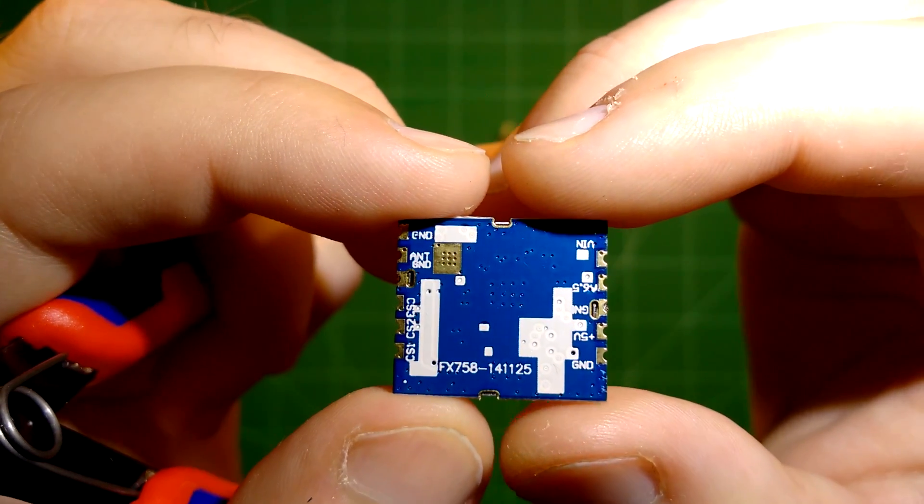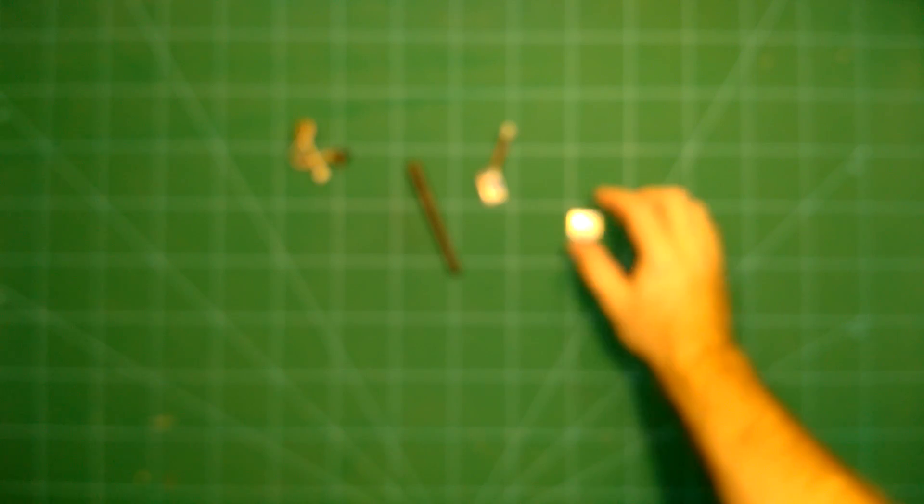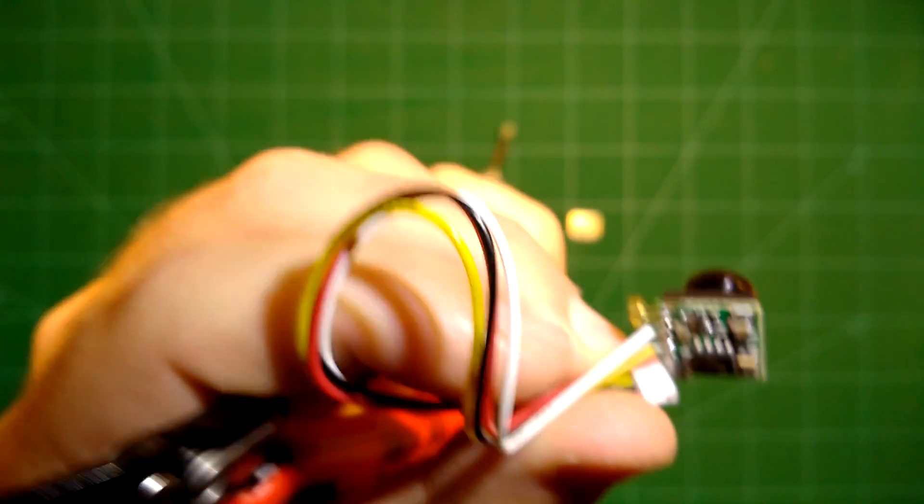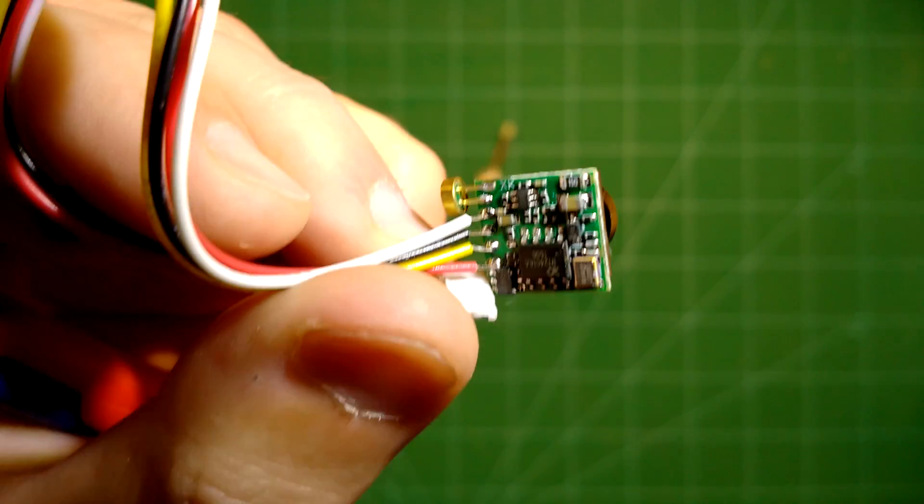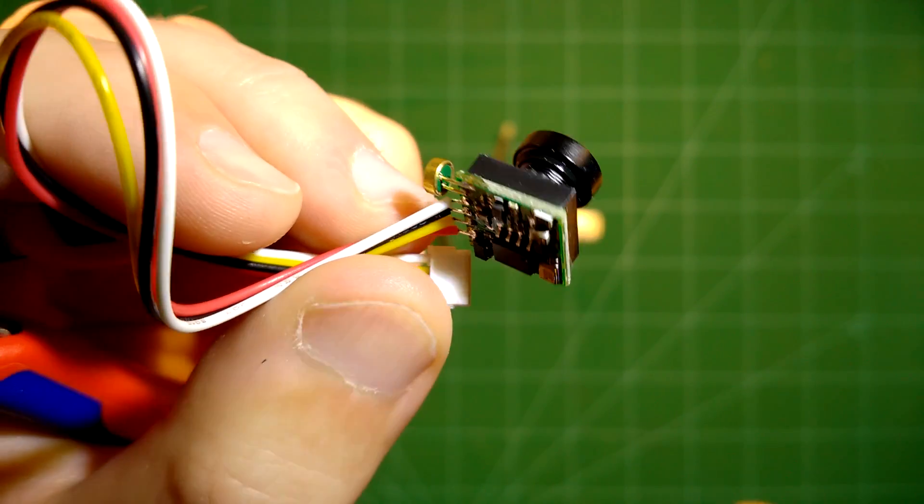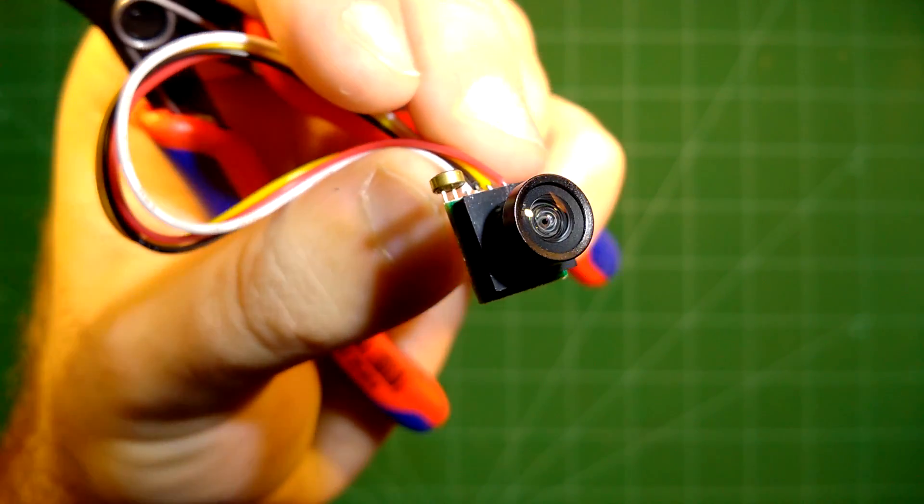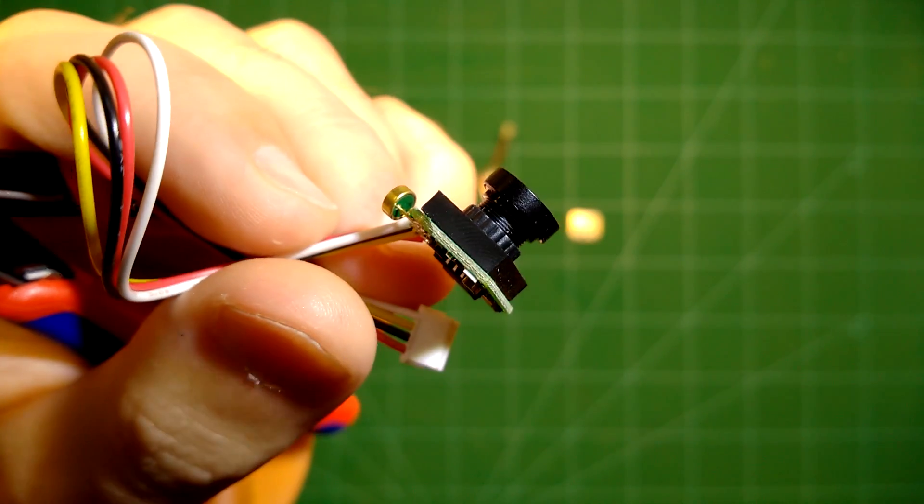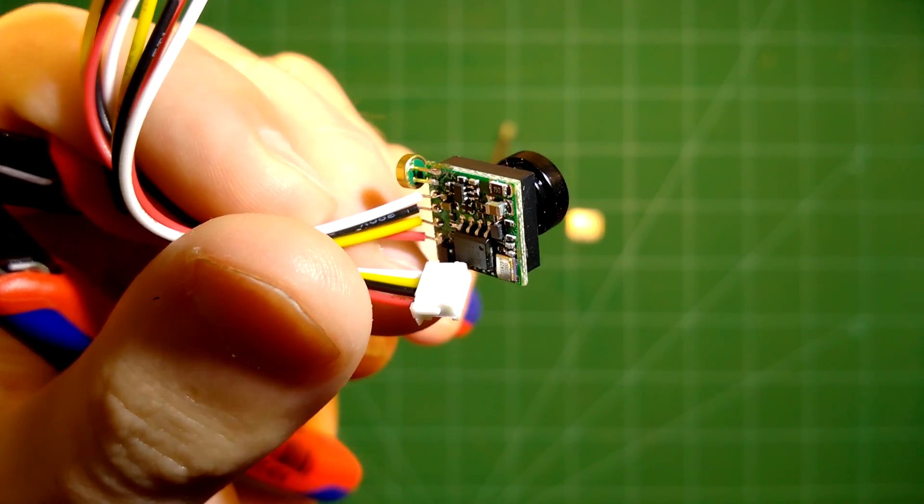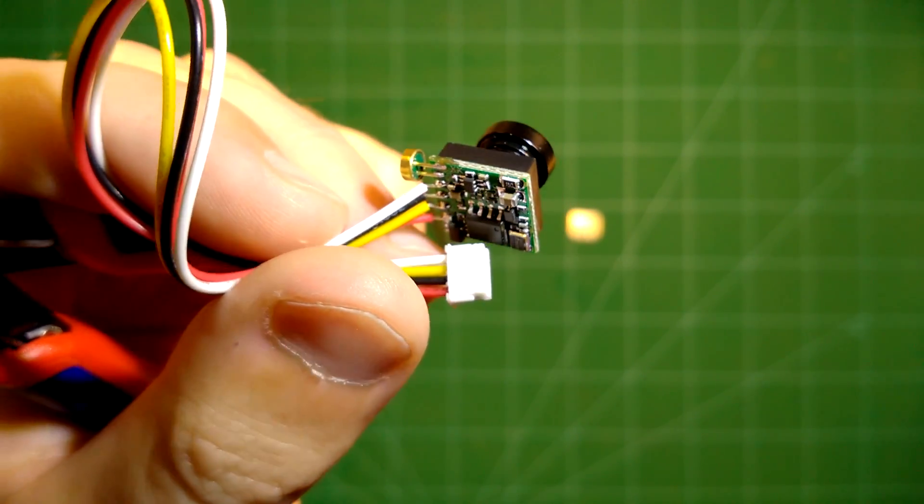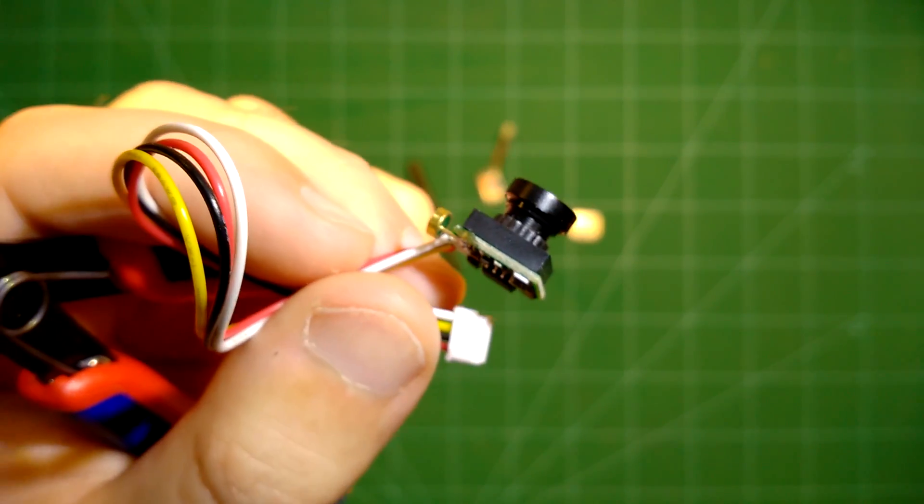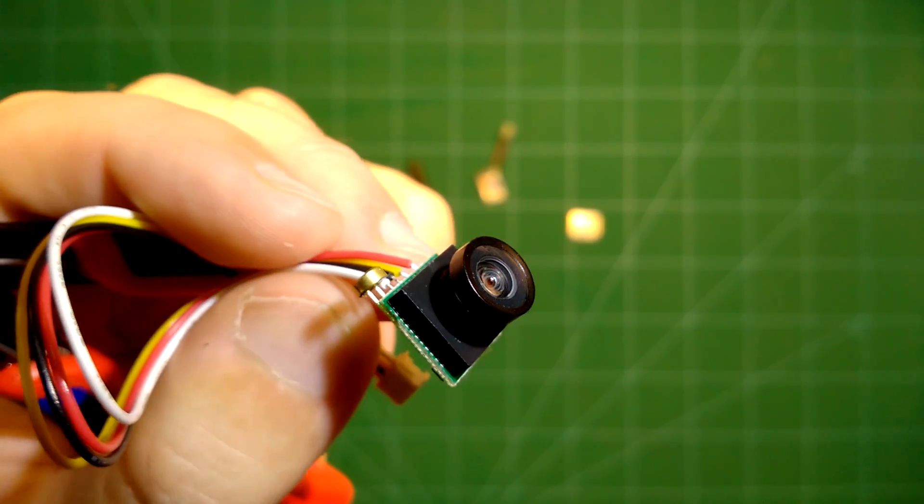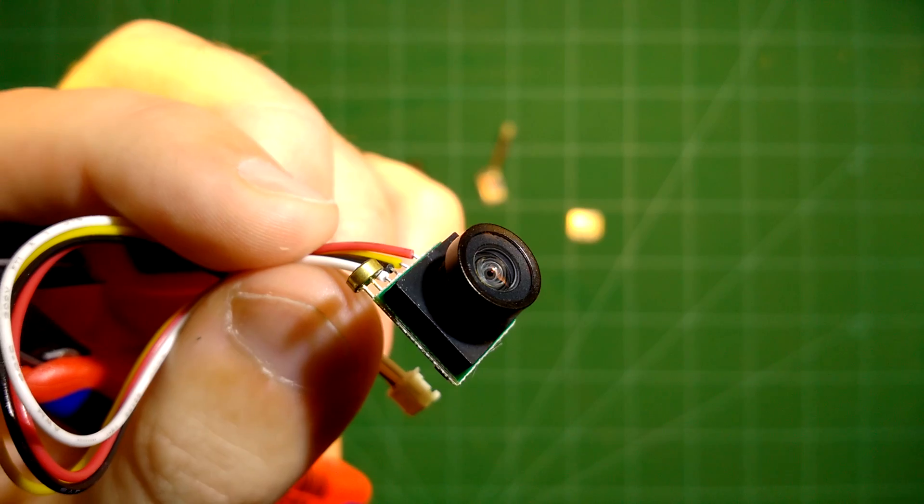Of course you still need the camera and here again we have this nice and cheap, they cost about 10 bucks, 600 TVL CMOS cameras from Banggood which also weigh almost nothing. So they are 3-4 grams. And well I used this camera, hooked it up to the transmitter and made it work.